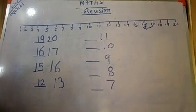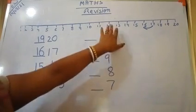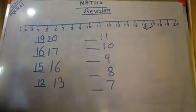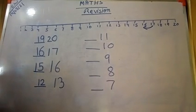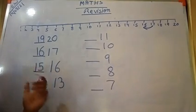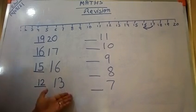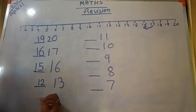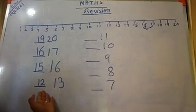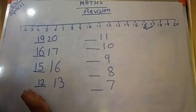12 is the front number of 13. So always remember this: whenever the dash is in front, it is called 'before.' The dash is before the number. So the before number of 13 will be 12.